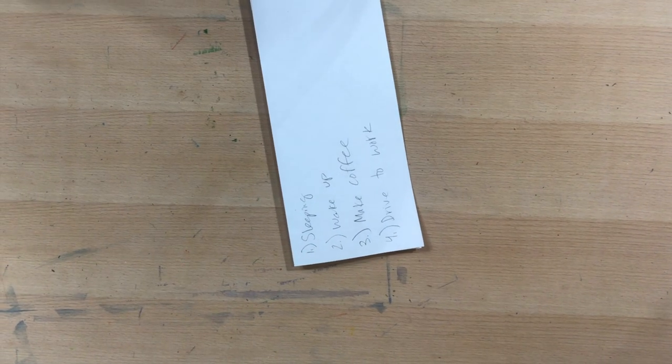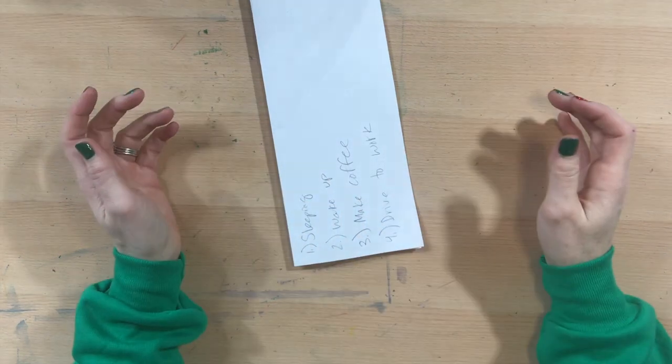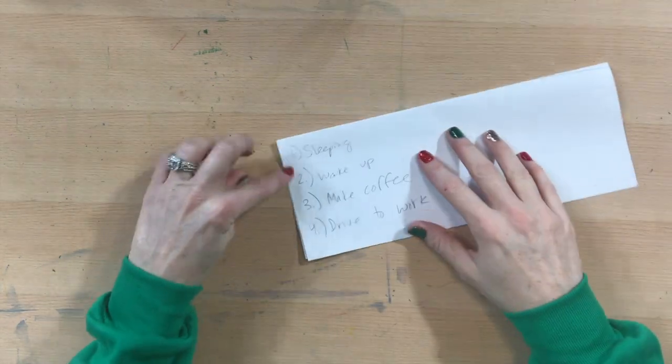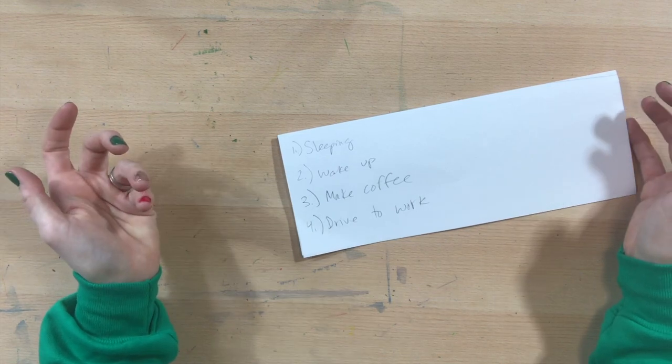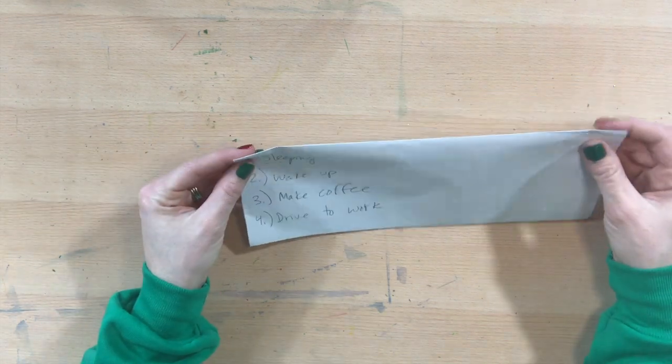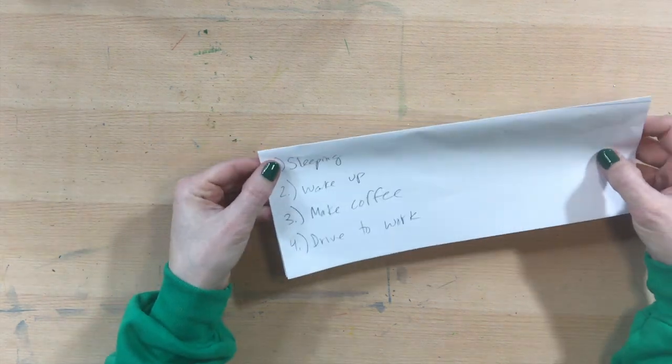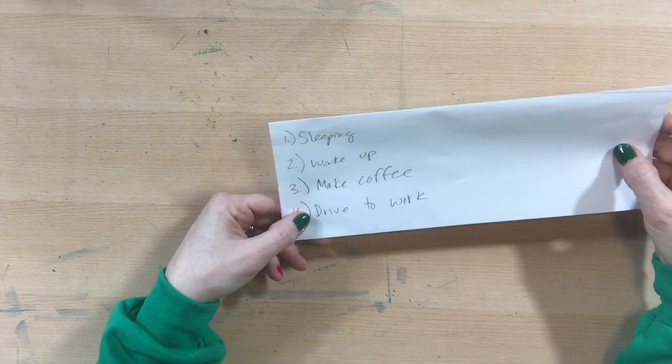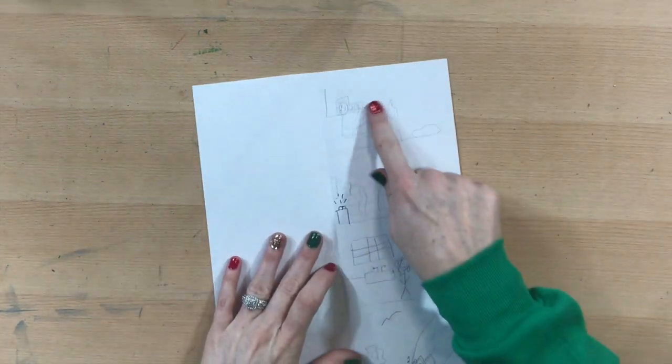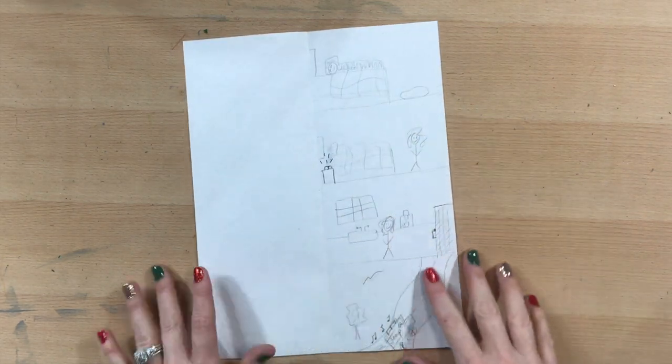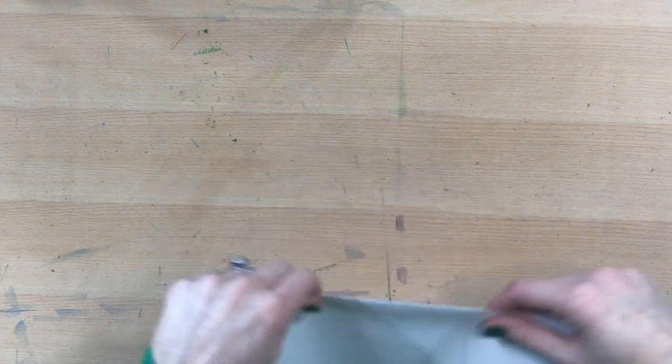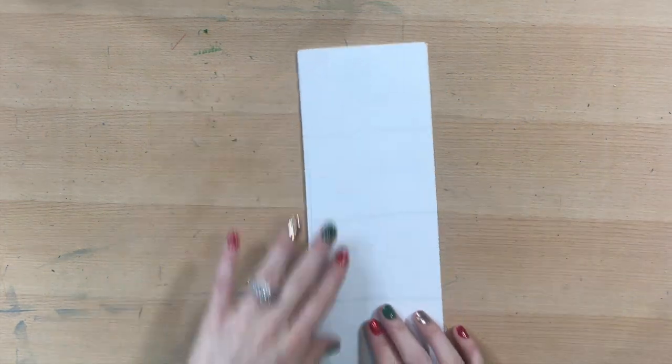All right so last week we talked about telling a story or drawing a story without words. So I did some planning and I wrote down what I wanted my storyboard to be about and I put down sleeping, wake up, make coffee, drive to work. I did a rough sketch of what that might look like in my four different blocks. Now I'm going to show you another example and walk you guys through how I would do it.